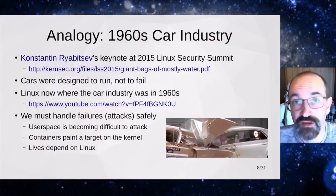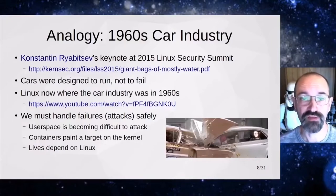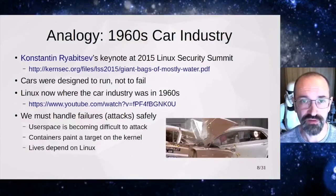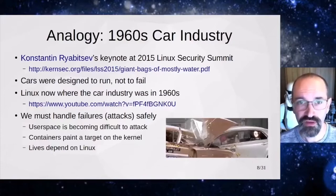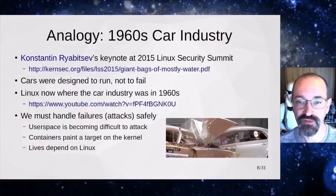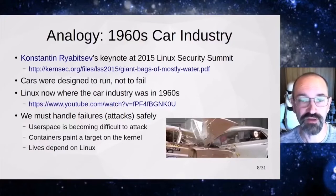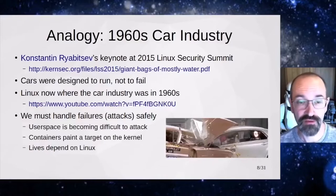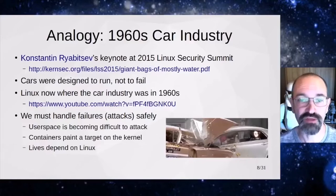I always come back to the analogy that Kees gave in the 2015 LSS, comparing Linux kernel development to the 1960s U.S. car industry, where things were designed to run well but weren't exactly designed to fail. This image is a 1959 Bel Air on the left and a 2009 Chevy Malibu. The 1959 car was not designed to fail — it drove well, but in a crash the whole front end would be destroyed — whereas the 2009 car is much better because it was designed with failure in mind.